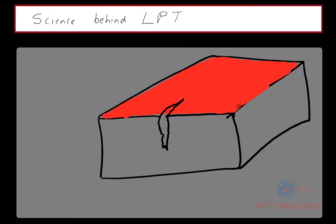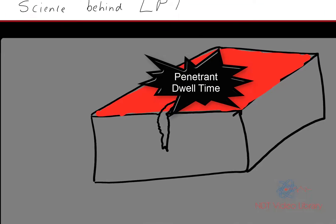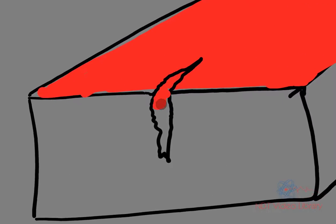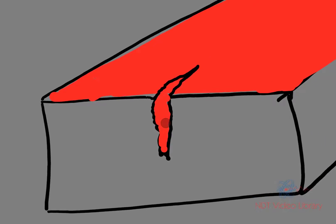Once you spray the penetrant, you let it sit for a few minutes, five to ten minutes. This is called the dwell time. During this dwell time, the penetrant starts seeping inside the crack due to capillary action. The penetrant fills up the void of the crack.